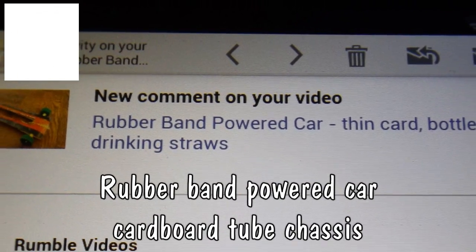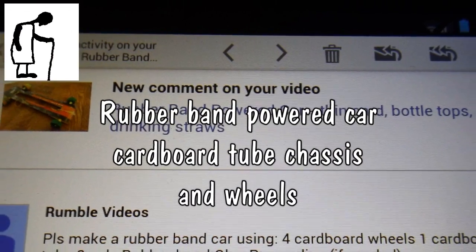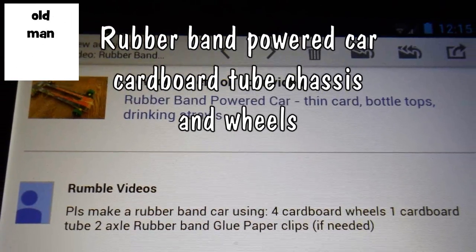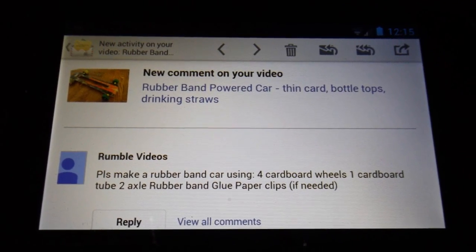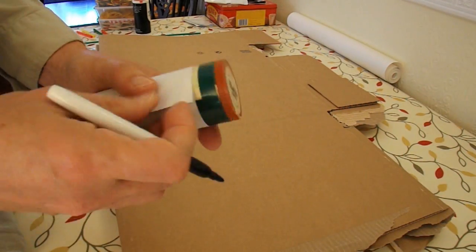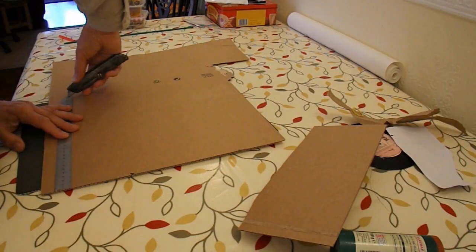Hi guys, got a request from Rumble Videos to make a rubber band powered car using four cardboard wheels, one cardboard tube, two axles, rubber bands, glue and paper clips if needed.